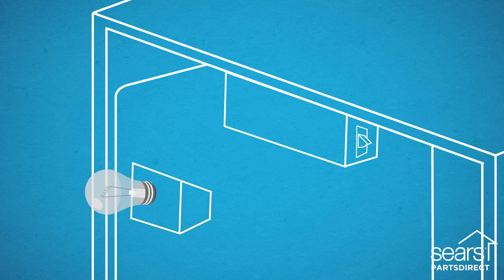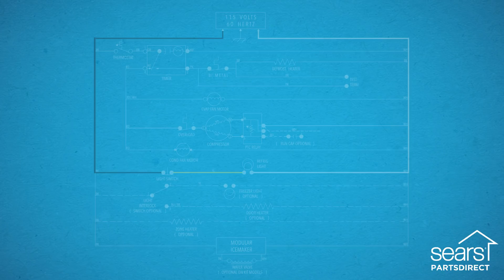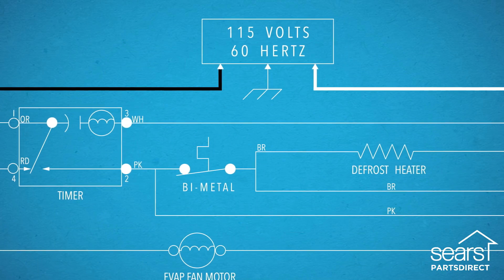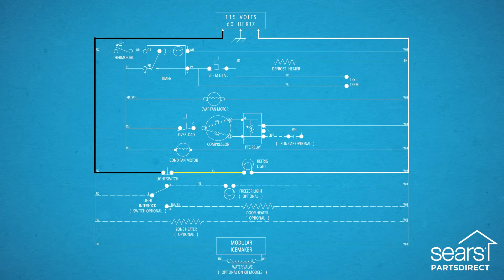Accurately diagnosing a failure will help you buy the right part so you can get the appliance working again. Other circuits in the refrigerator are more complicated, but you can use this basic method of tracing a circuit to understand possible causes of failures in your appliances.